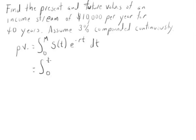It's going to be from 0 to 40. We're going 40 years. Our income stream is $10,000, e, our rate is 3%, so that's negative 0.03t dt.